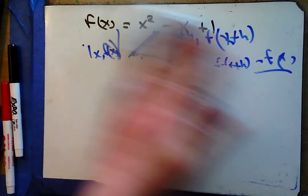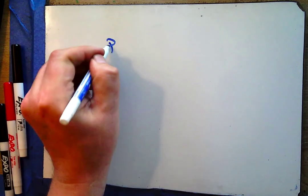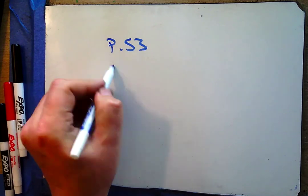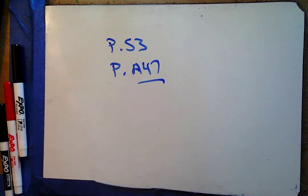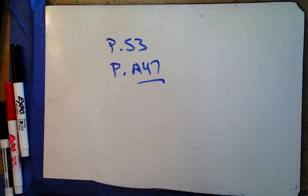In your Office 365 folder you'll see a page of notes about the difference quotient with more examples. Your homework is just working with some difference quotient problems — don't be freaked out by them. Do notice that homework is on two different pages: page 53 in the front of the book and page A-47 in the back. Take care everyone, I'll see you in the next video.